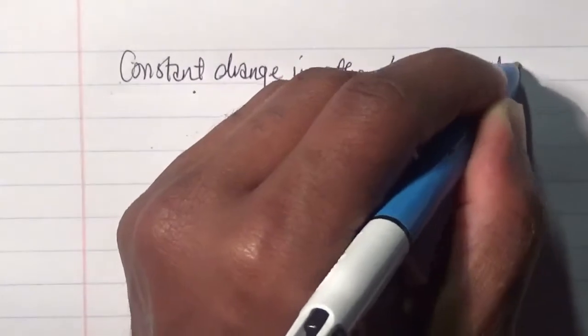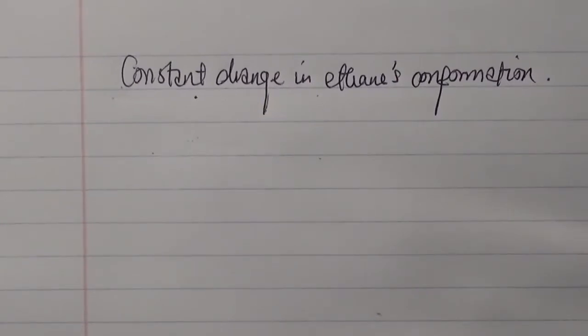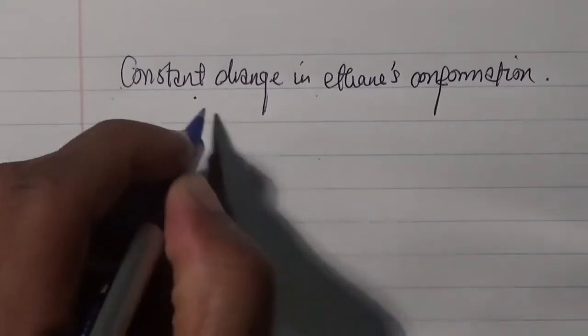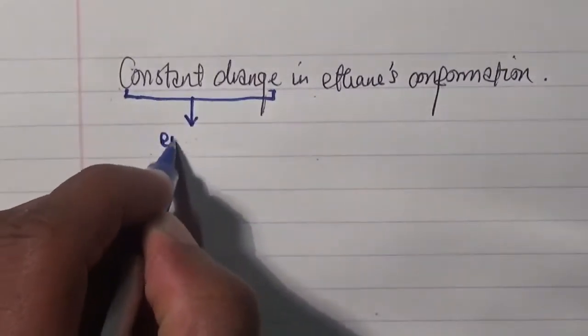So there is a constant change in ethane's conformations, which are the eclipsed and staggered that we explored in a previous video. This change in the conformation is usually done with respect to their conformational energies. So this change is highly linked to the change in energies.